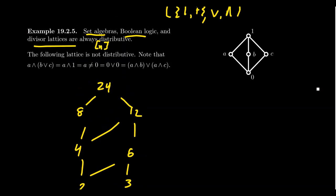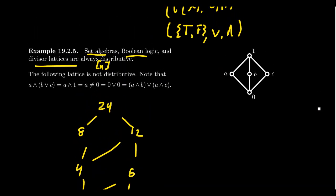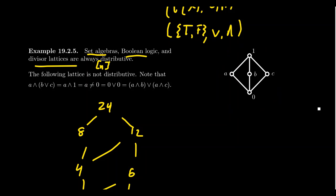Before we convince ourselves that all lattices are distributive, let me give an example of a lattice that is not. Consider the lattice whose minimal element we call zero (the join identity) and maximum element we call one (the meet identity), with three other elements A, B, and C. This is the Hasse diagram for the subgroups of the Klein four group — a lattice we've seen many times — and it is not distributive.